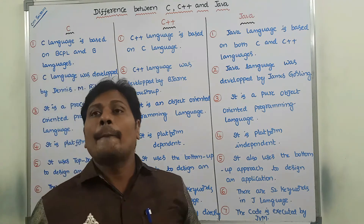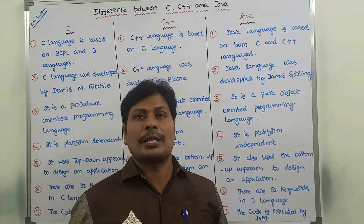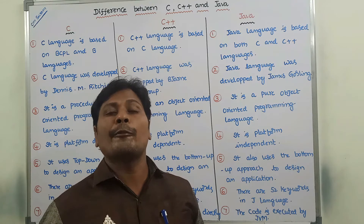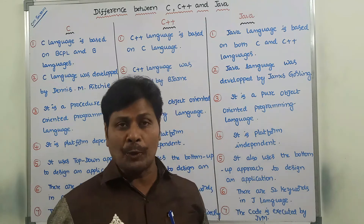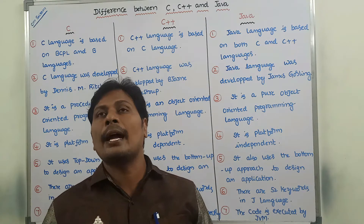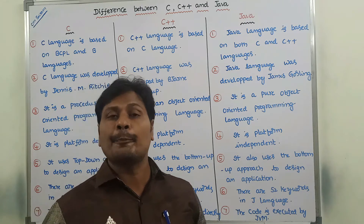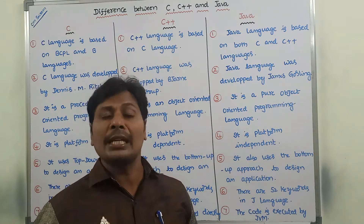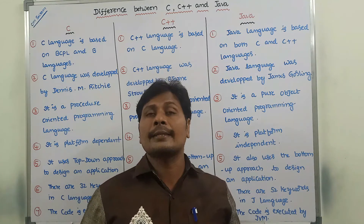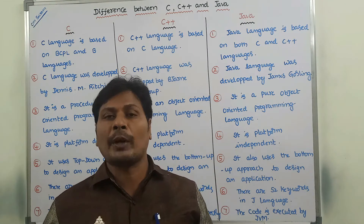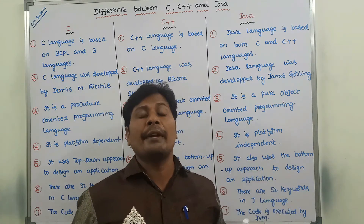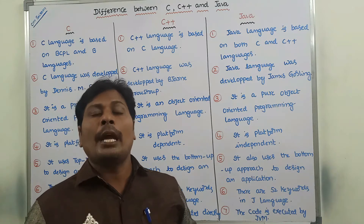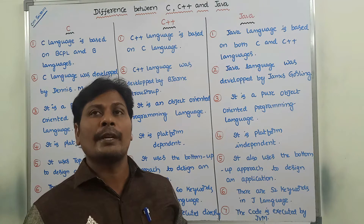The third point: C is a procedure-oriented programming language. Every C program can be defined in terms of procedures, functions, or modules. Hence C is a procedure-oriented programming language. Whereas C++ is an object-oriented programming language, and Java is a pure object-oriented programming language. Now, what is the difference between object-oriented and pure object-oriented programming language?